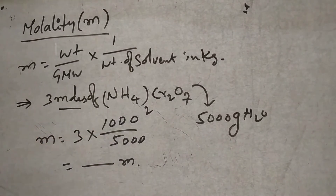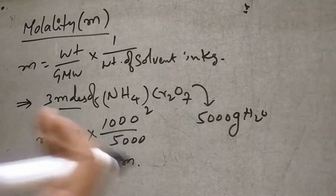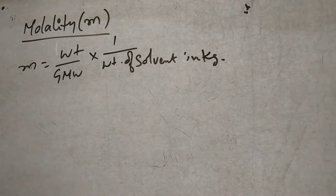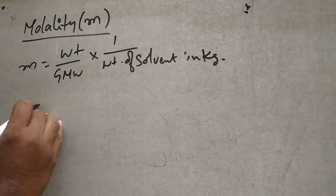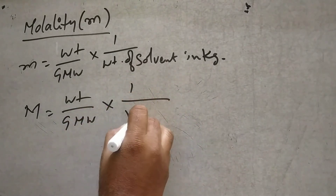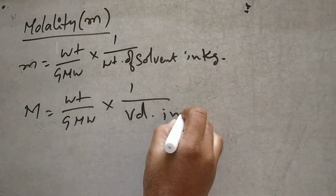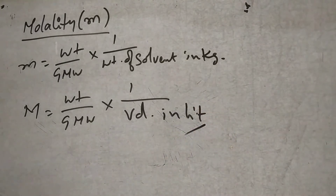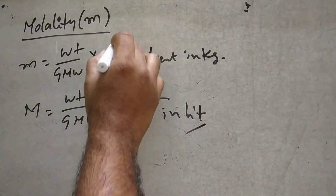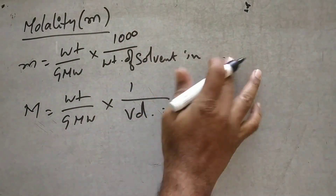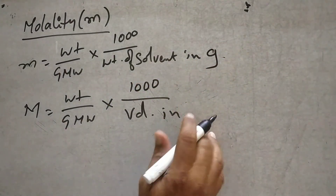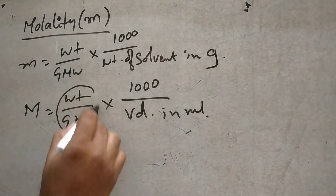That is the difference between molarity and molality. Molarity is equal to weight divided by gram molecular weight, into 1 divided by volume in liters. For molarity, volume is in liters; for molality, mass of solvent is in kg. The difference: molarity uses mL or liters, molality uses kg.